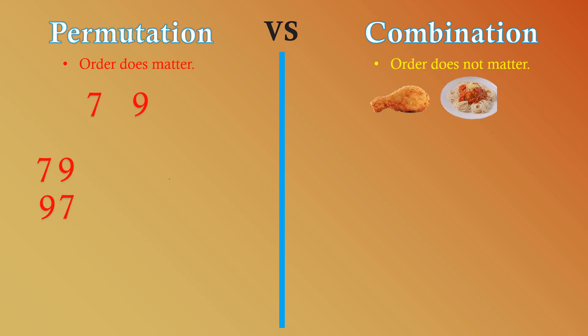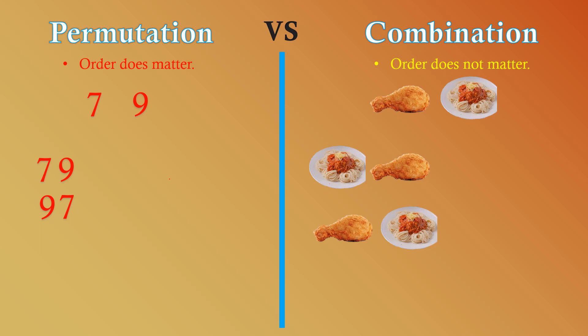In combination, order does not matter. For example, we are dealing with fried chicken and spaghetti. If the first person ordered spaghetti followed by chicken, and the second person ordered chicken followed by spaghetti, do those two persons have different orders? The answer is no — both have the same order, so both count as one because it doesn't make any difference. This is what combination is.